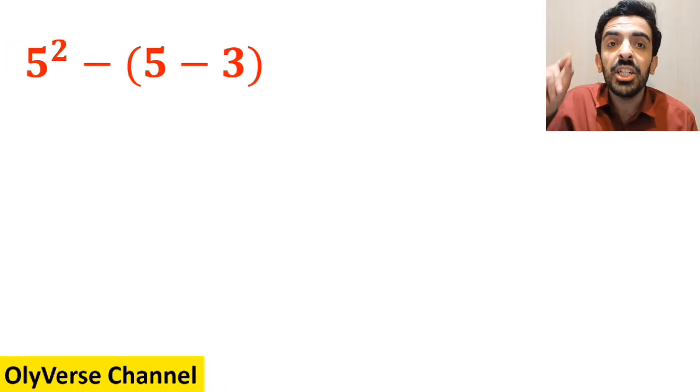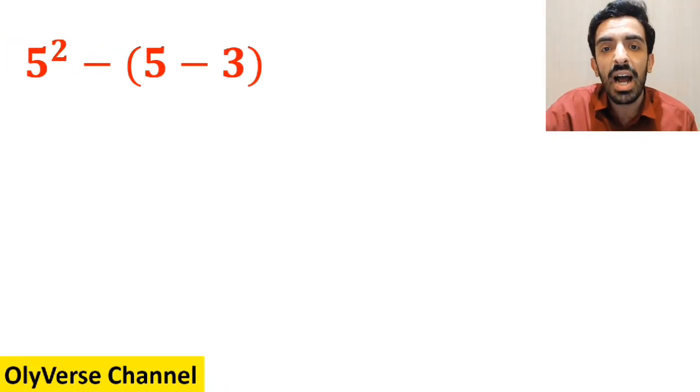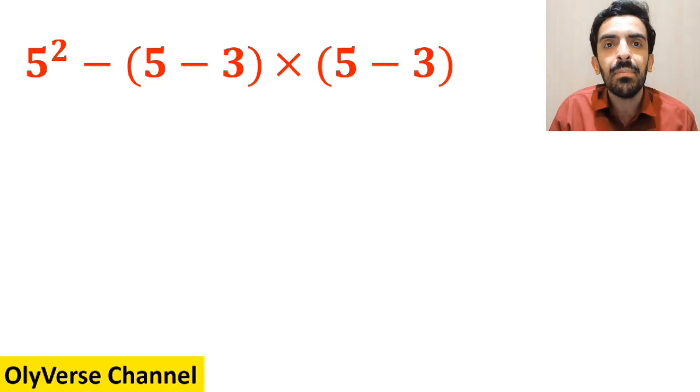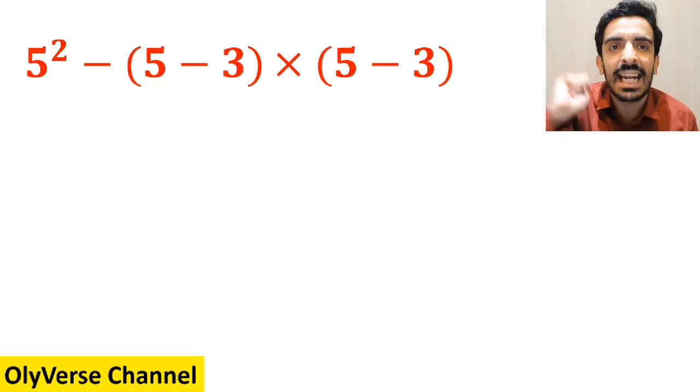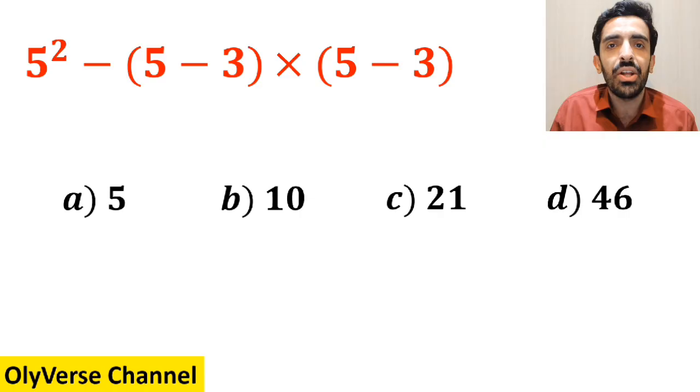What is the value of the expression 5 squared minus 5 minus 3 inside the parenthesis, then multiply it by 5 minus 3 inside the parenthesis again? Which option do you think is the correct answer to this question?